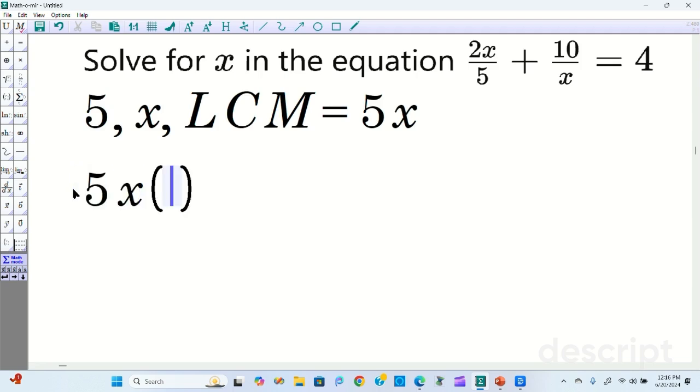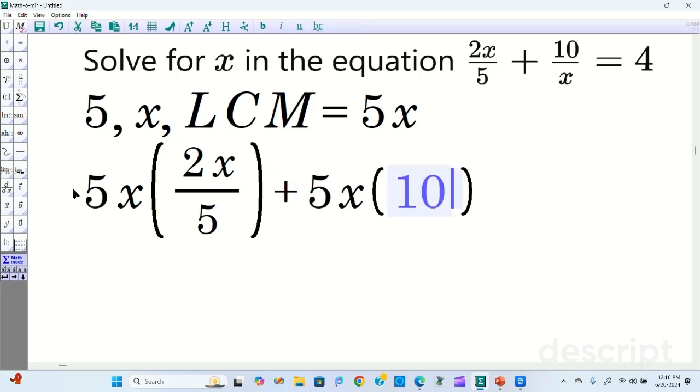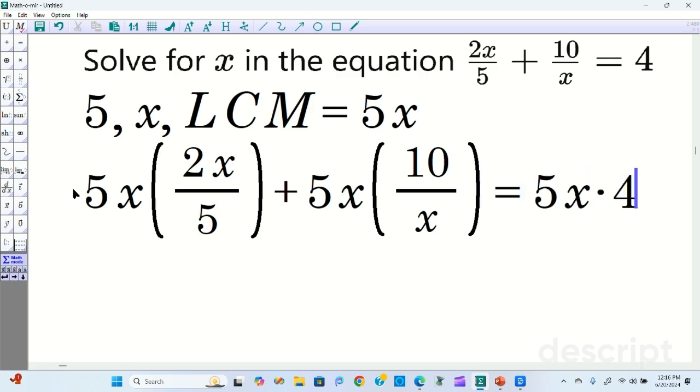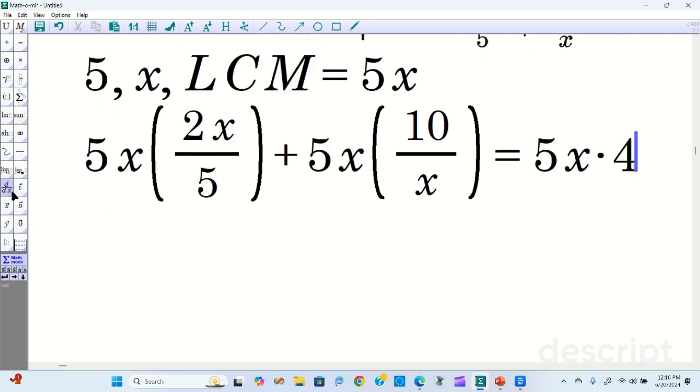So it's going to be 5x multiplying 2x over 5, the first one, plus 5x multiplying 10 over x, the second one, equals 5x times 4. Every single term gets multiplied by 5x. Can't stress that enough.